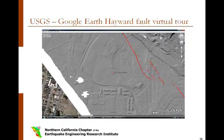In many cases, the on-the-ground comparison of building structures with those damaged in the Northridge earthquake is still possible, but now with the use of Google Maps Street View. This close-up shows the fault bisecting the Contra Costa College campus in San Pablo.